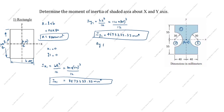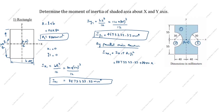Now we apply the parallel axis theorem. The formula is IXX1 = Ix1 + A1·y1². So IXX1 = 8,873,333.33 + 8800 × 0² = 8,873,333.33 + 0 = 8,873,333.33 mm⁴.